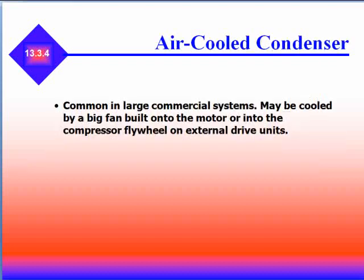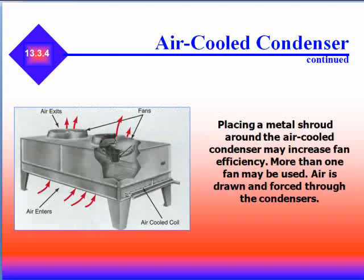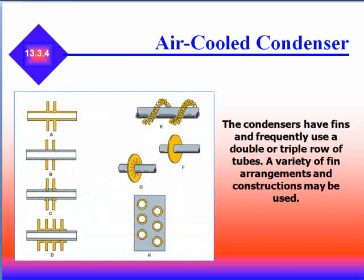Air-cooled condensers are common in large commercial systems. They may be cooled by a large fan built onto the motor or into the compressor flywheel on external drive units. Placing a metal shroud around the air-cooled condenser may increase fan efficiency, and more than one fan is used. Air is drawn and forced through the condensers, which have fins and frequently use double or triple rows of tubes. A variety of fin arrangements and construction may be used.